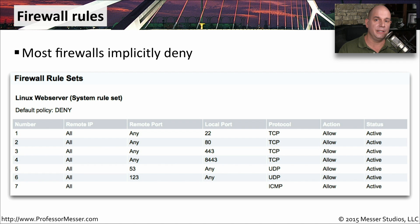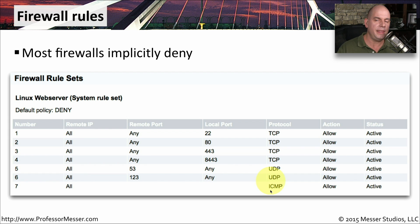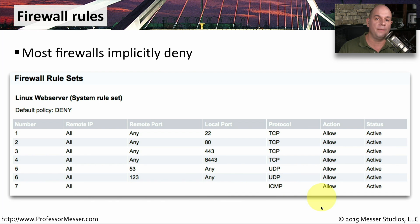Most firewalls and security devices are configured to explicitly deny anything that does not appear in the access list or security policies. Looking at a security policy for a web server, we can see traffic is allowed on port 22, port 80, port 443, and port 8443. DNS traffic is allowed inbound on port 53, NTP traffic on port 123, and ICMP ping traffic is also allowed. There's nothing after that explicitly saying stop all other traffic, but there is an implicit deny at the bottom — meaning if traffic doesn't match any of these access list rules, it will be automatically dropped.